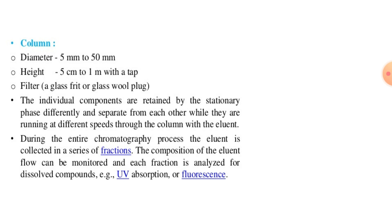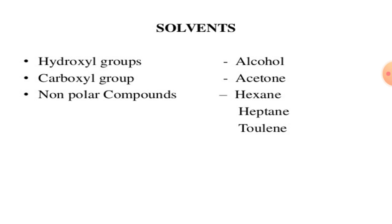During the chromatography process, the eluent is collected in a series of fractions. The composition of the eluent flow can be monitored and each fraction is analyzed for dissolved compounds — for example by UV absorption or fluorescence. Solvents used for column chromatography include hydroxyl groups such as alcohols, carboxyl groups such as acetone, and non-polar compounds such as hexane, heptane, and toluene.